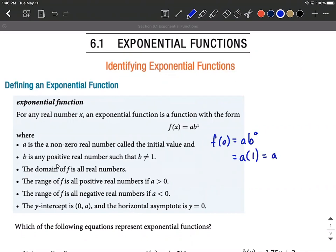b is going to be some positive real number. So it can't be a negative number for the base here, whatever has the exponent attached to it. We also say that our base can't be equal to one. So positive but not equal to one.